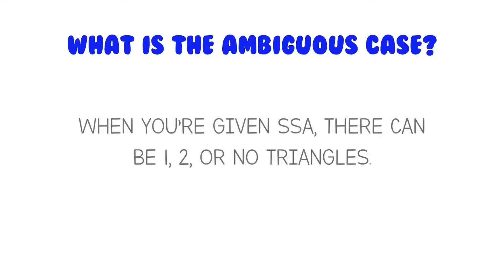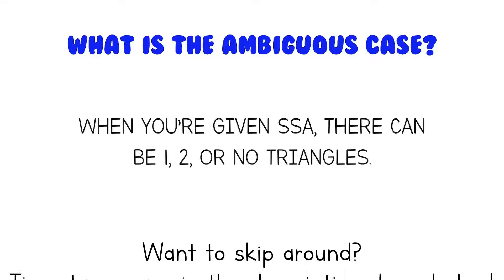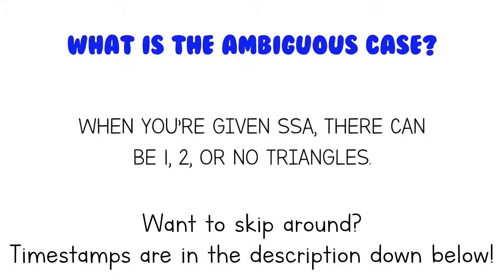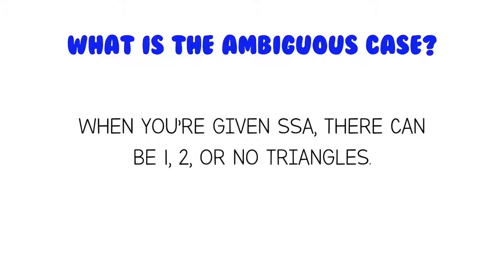So what is the ambiguous case? Well, the ambiguous case is when you're given SSA — side-side-angle — in a triangle. And when you're given SSA, there can be 1, 2, or no triangles.